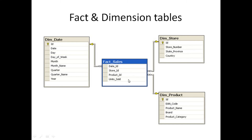We can select columns and unit sold from the tables joined on date. This type of schema — where one fact table joins to multiple dimension tables — is called a star schema. Thank you for watching.